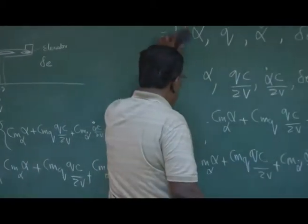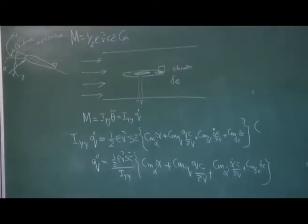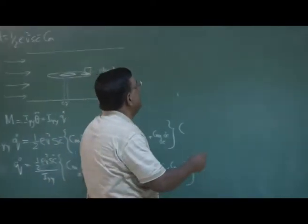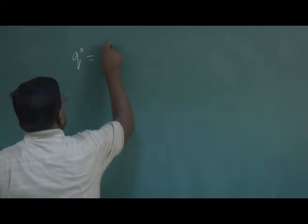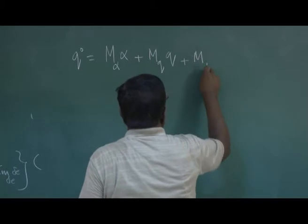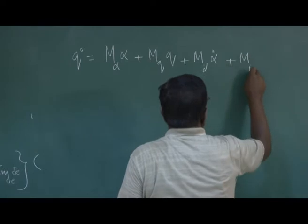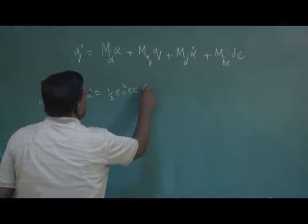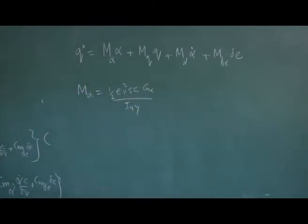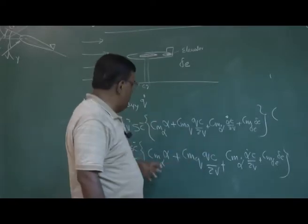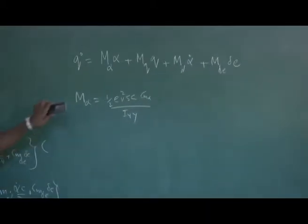Writing it in a neater form, I define: m_alpha = (1/2)*rho*v^2*S*c_bar*Cm_alpha / I_yy. Similarly m_q corresponds to Cm_q * c/2v, and m_alpha_dot corresponds to Cm_alpha_dot * c/2v. So q-dot = m_alpha*alpha + m_q*(qc/2v) + m_alpha_dot*(alpha_dot*c/2v) + m_delta_e*delta_e.